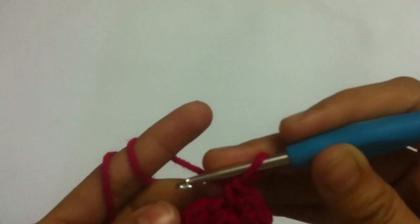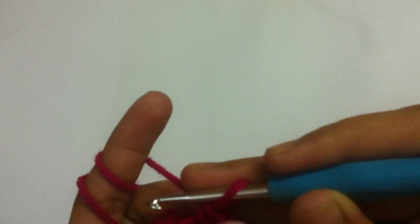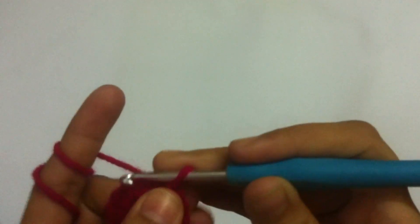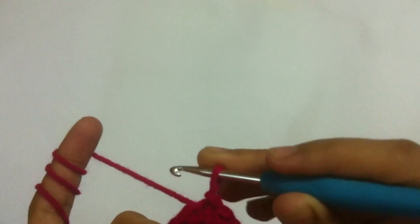One, two, three, four, five, six. So here we have 12 single crochets. Now in the first stitch, we are going to do the slip stitch. Our center part is complete. We are going to now join our second color, that is the yellow.